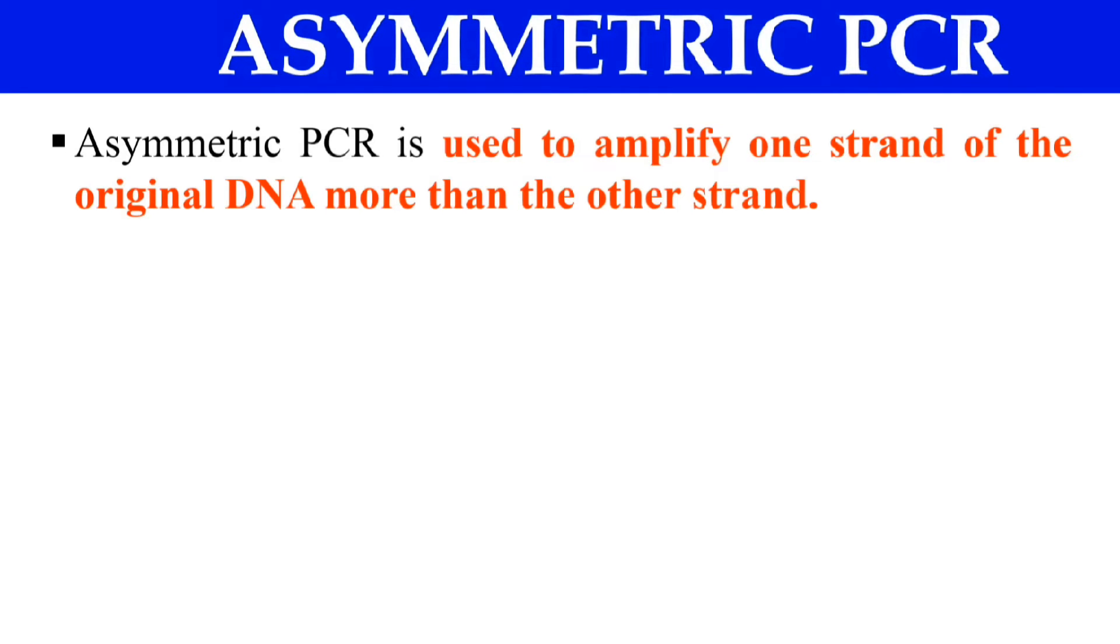Asymmetric PCR. So what does asymmetric mean? Symmetry means when two or more things are in the same order, same pattern. That is known as symmetry.